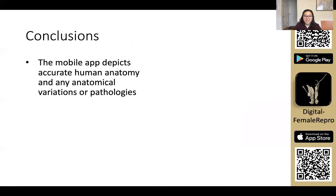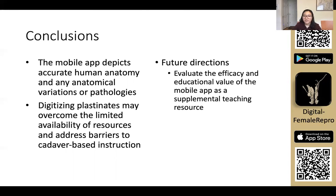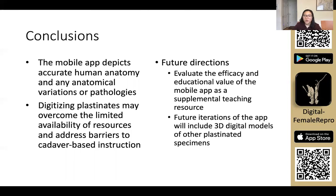Overall, the mobile app depicts accurate human anatomy and any anatomical variations or pathologies. Digitizing plastinates may be a method to address current challenges in anatomy instruction. Future directions include evaluating how well the app works as a supplemental teaching resource, and we are also hoping to create more apps that will include 3D digital models of other plastinated specimens.